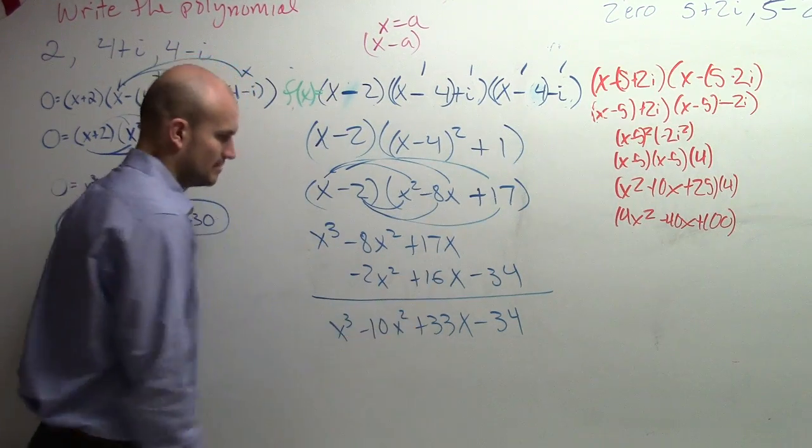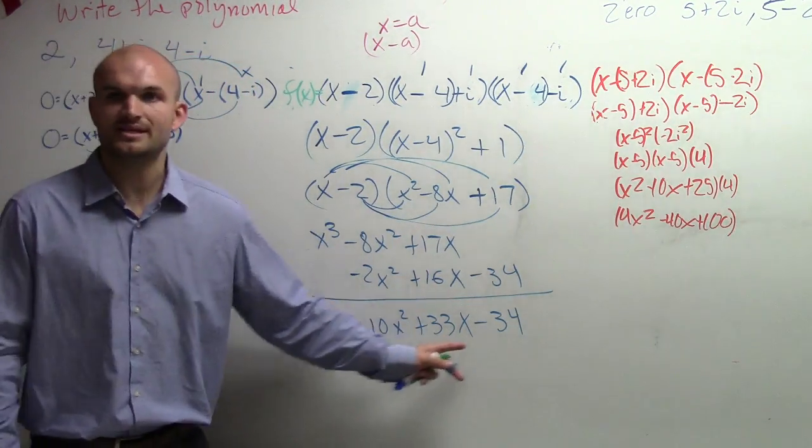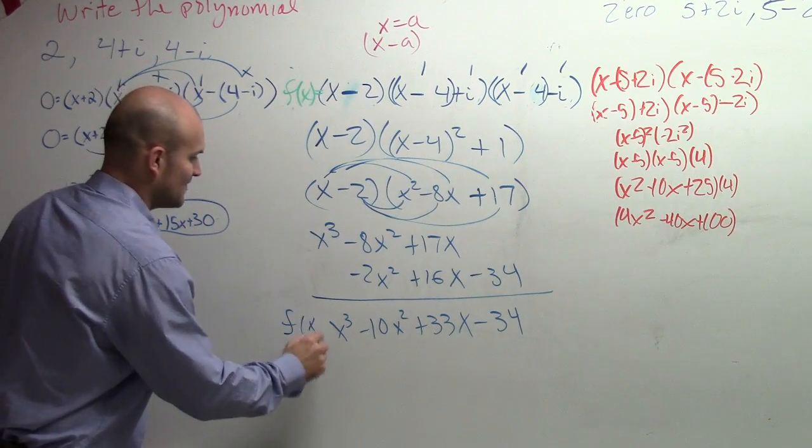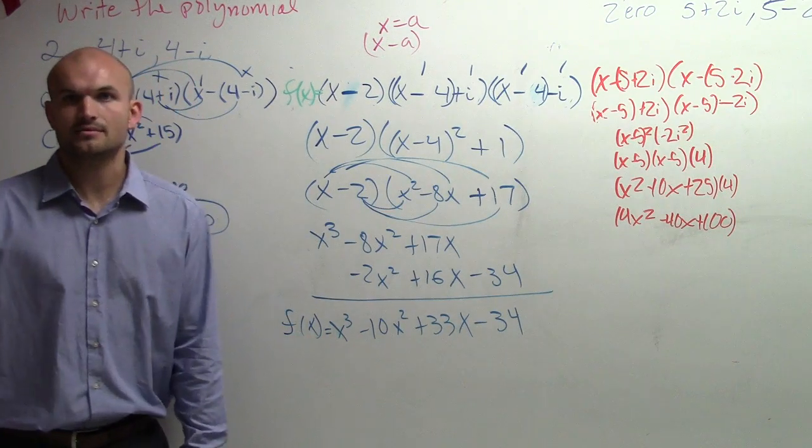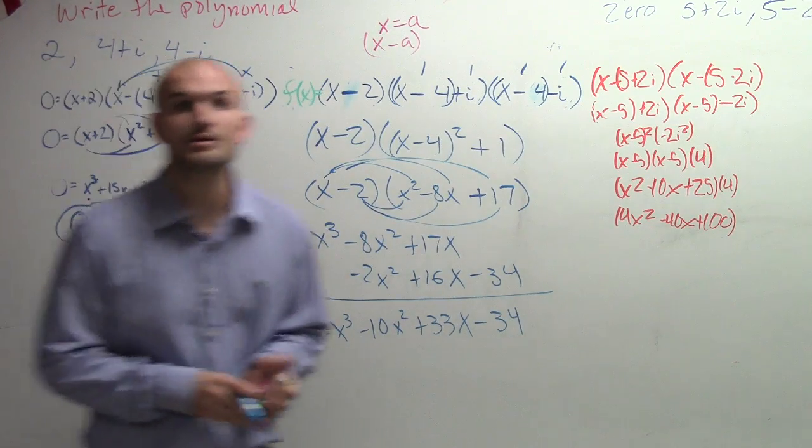X cubed minus 10x squared plus 33x minus 34. 33. There you go. Good. Everybody see it? So then that's what f of x equals. See it? Make sense? Yes, questions. Go for it.